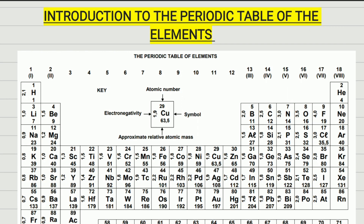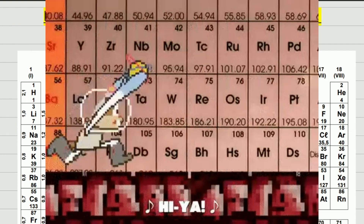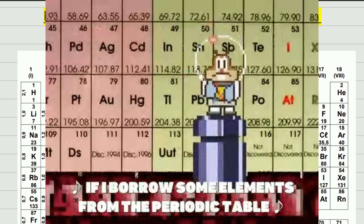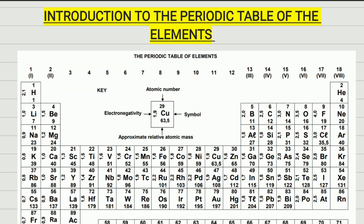Okay guys, Mr. G here with another video for Grade 8. Last time we learned about atoms — we learned that matter is everything around us that has mass and occupies some space. We learned about elements and mentioned that all the elements are located in a table called the periodic table of the elements. Today we're going to learn a little bit about this table.